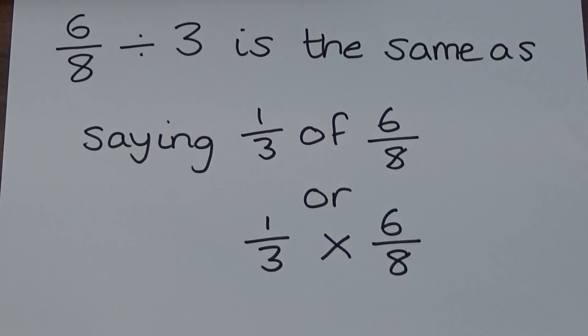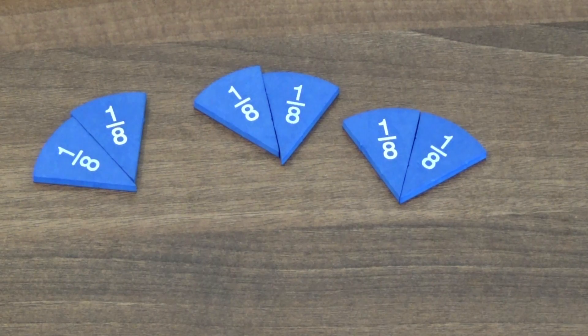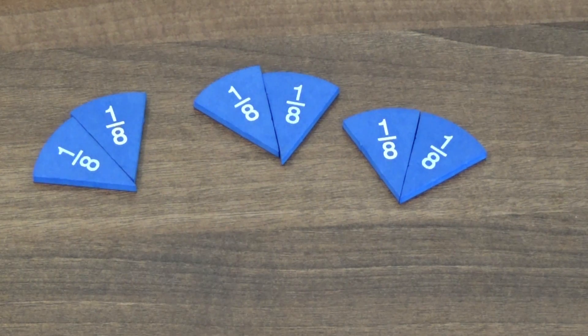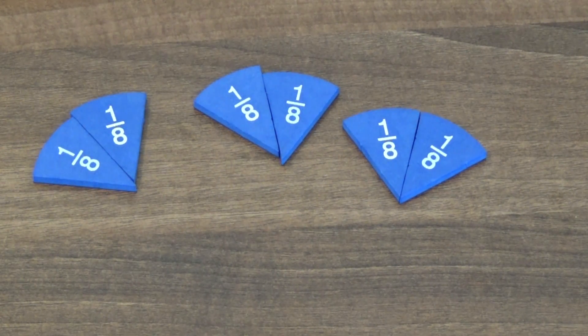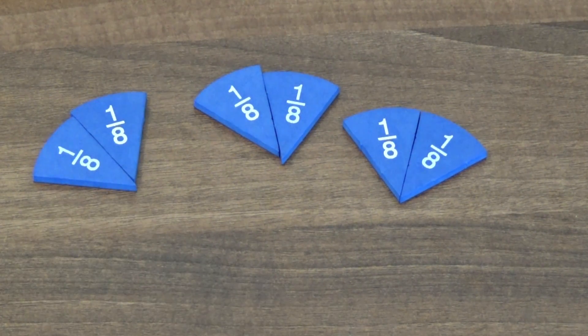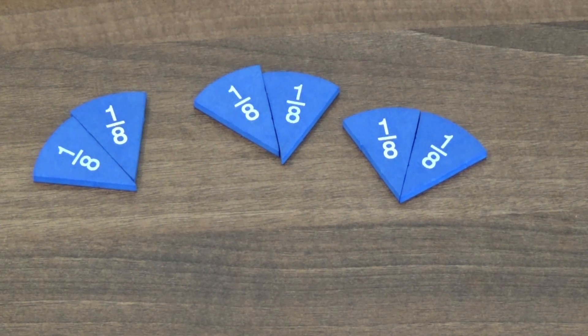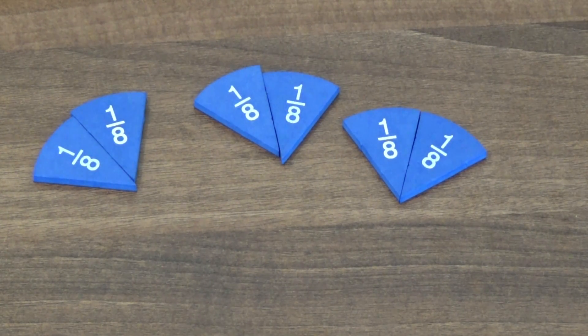Dividing six eighths by three is the same as saying one third of six eighths or a third times six eighths. If we look at our fraction circles, a third of six eighths is two eighths or a third multiplied by six eighths is two eighths.